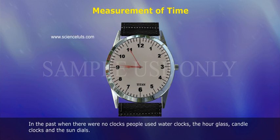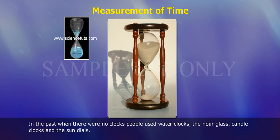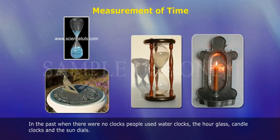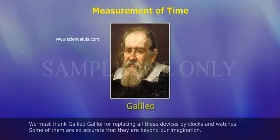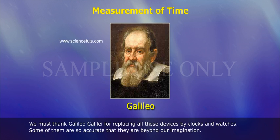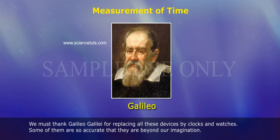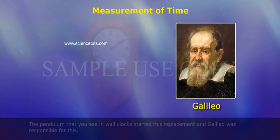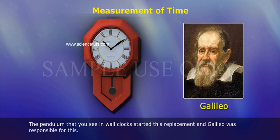In the past, when there were no clocks, people used water clocks, the hourglass, candle clocks, and sun dials. We must thank Galileo Galilei for replacing all these devices with clocks and watches. Some of them are so accurate that they are beyond our imagination. The pendulum that you see in wall clocks started this replacement, and Galileo was responsible for this.